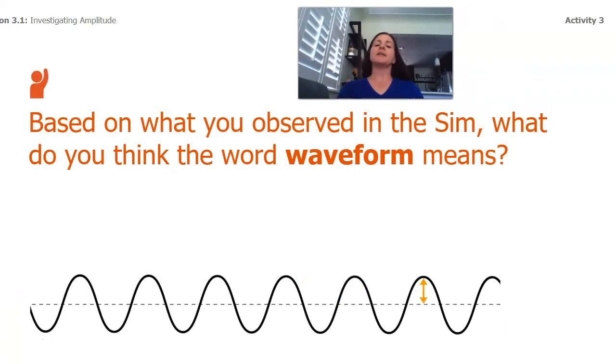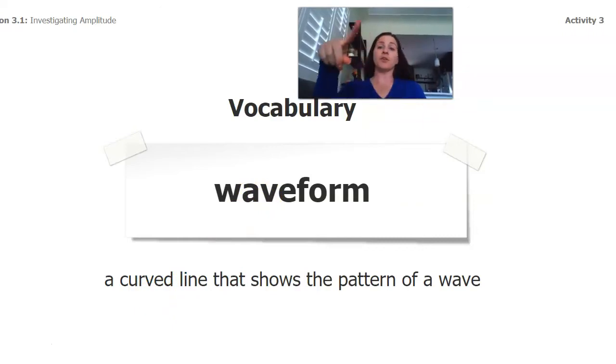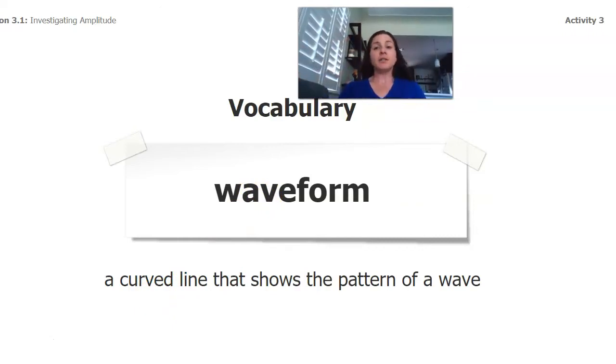Now, based on what we saw in the sim, what do you think the word wave form means? You know, I brought that up is that was kind of a new way, new word for me. So maybe if there's somebody in your house, you can talk to, what do you think that means? Or write it down on a piece of paper. So another vocabulary word that we have waveform is a curved line that shows the pattern of a wave. Okay, that makes sense. We saw a bunch of curved lines and they showed us the pattern of a wave.